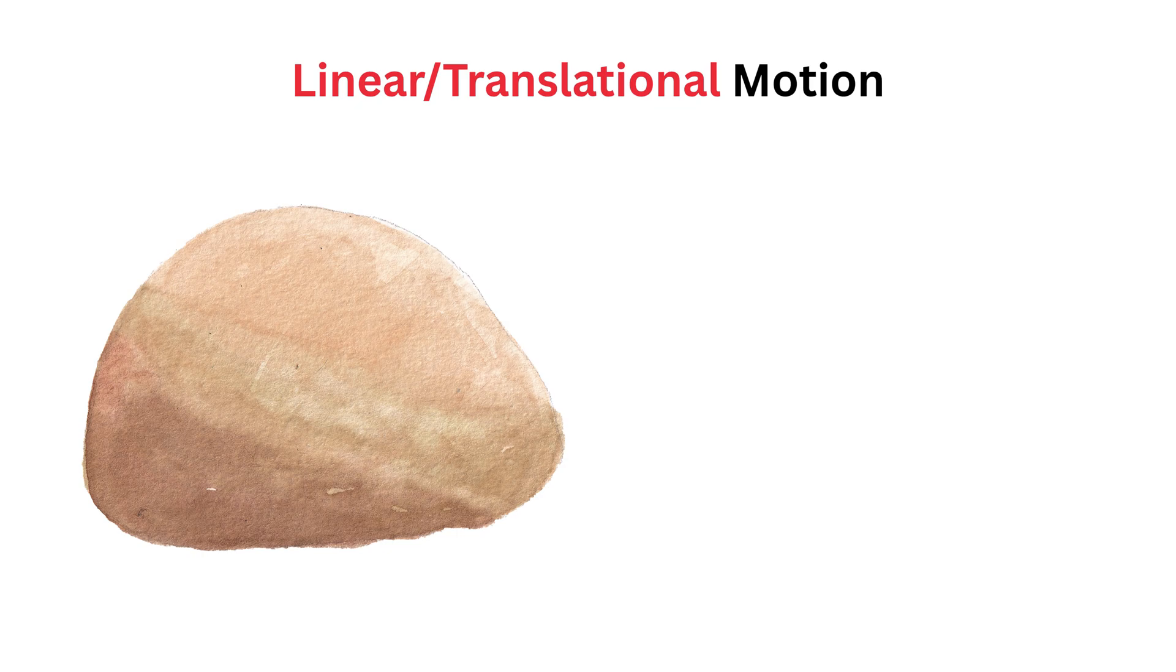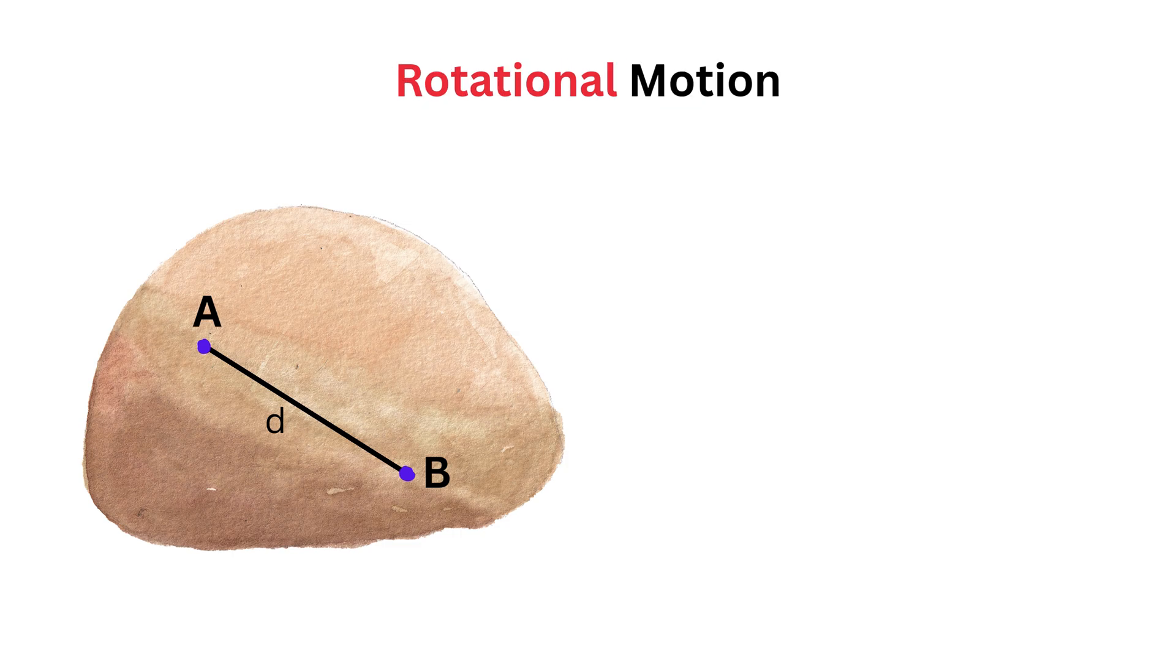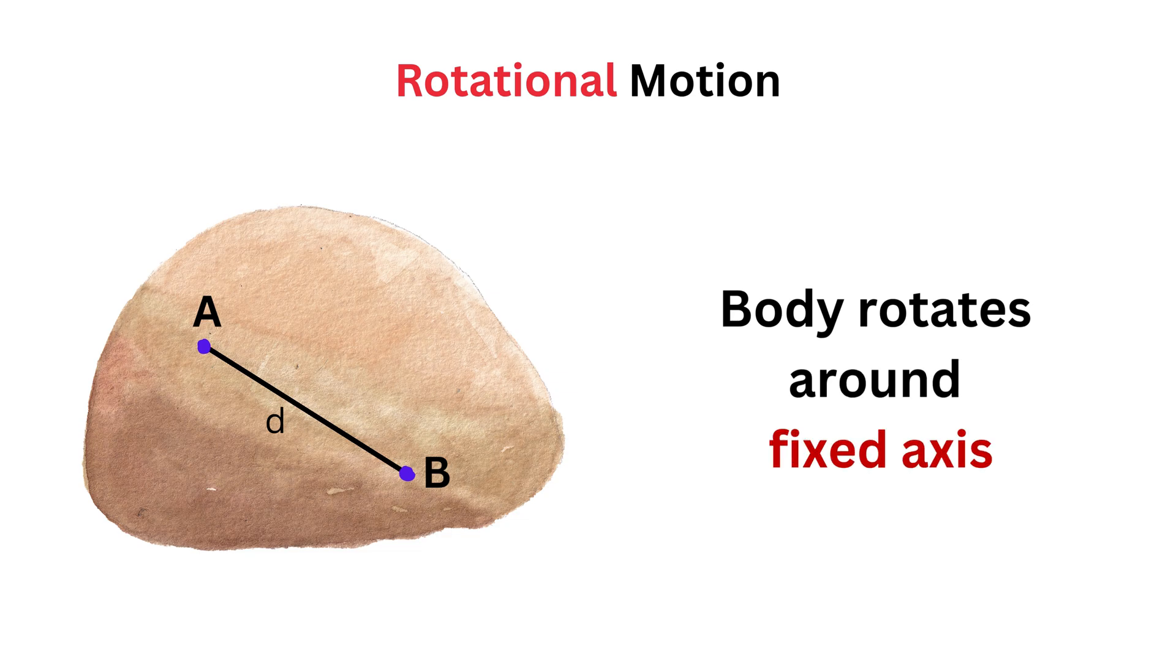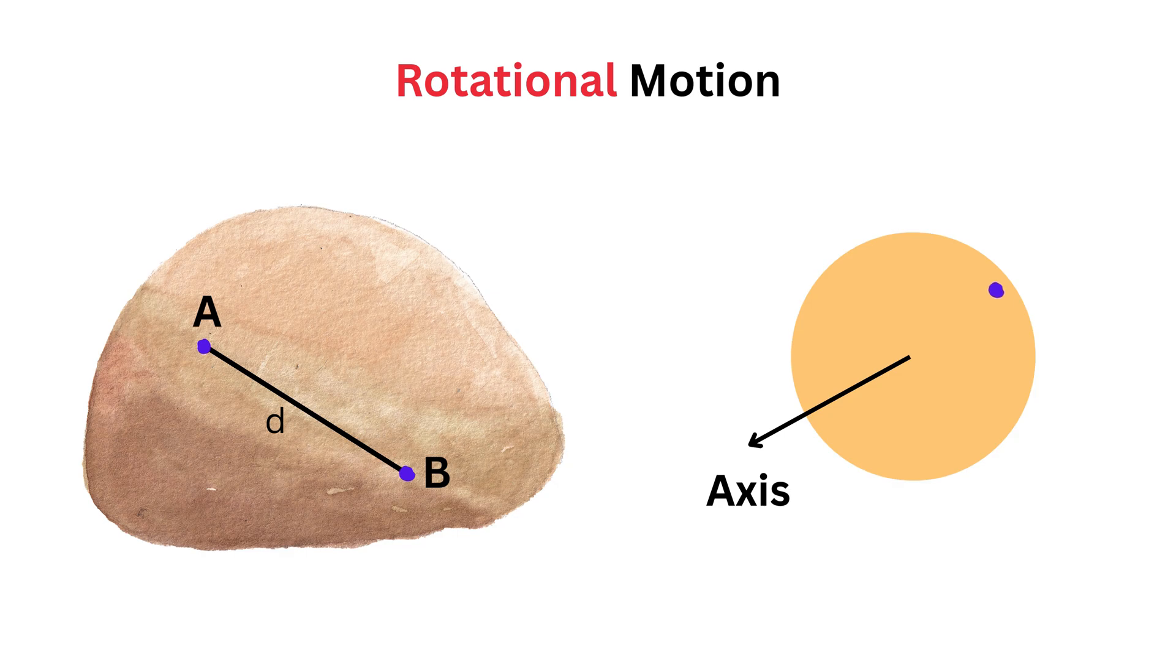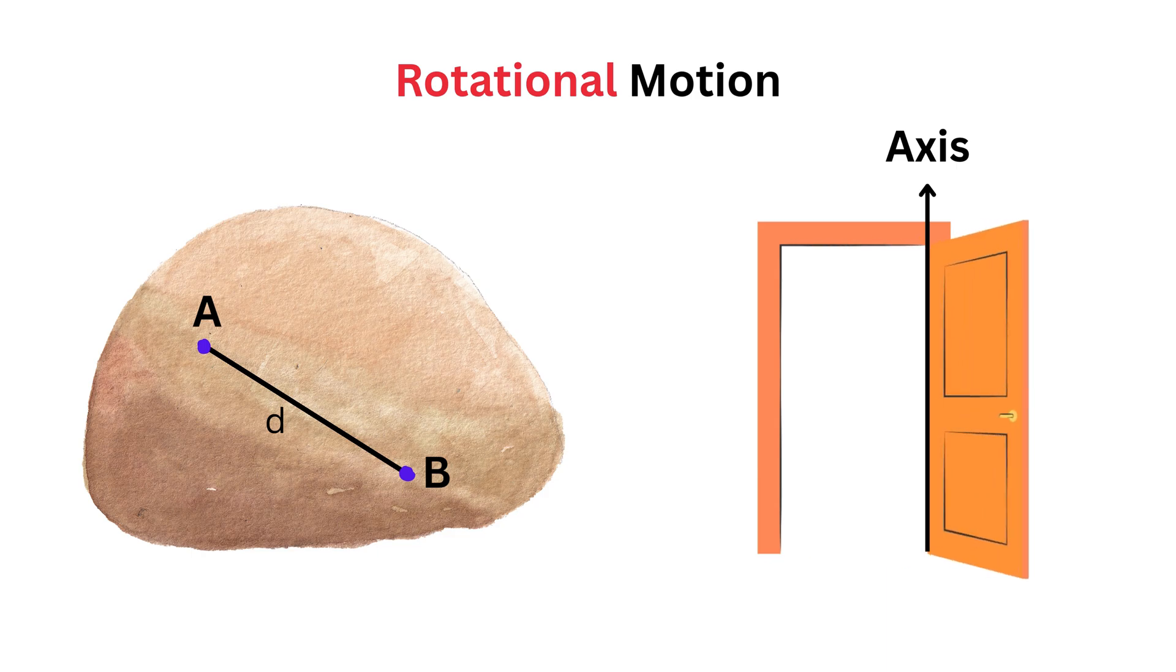Now, let's consider the same rigid body with internal points A and B, separated by a fixed distance D. But this time, the body is undergoing rotational motion. In rotational motion, instead of the whole body shifting in one straight line, like in linear motion, the body rotates around a fixed axis. This axis could be located within the body, like the center of a spinning disk, or outside the body, like the hinges on a door.